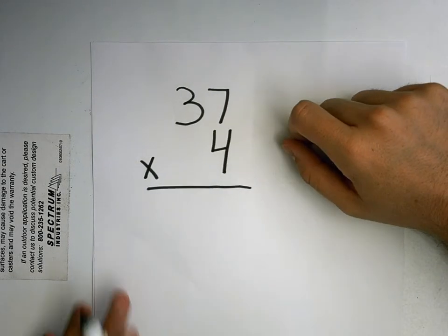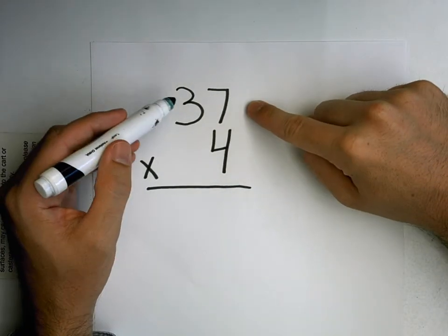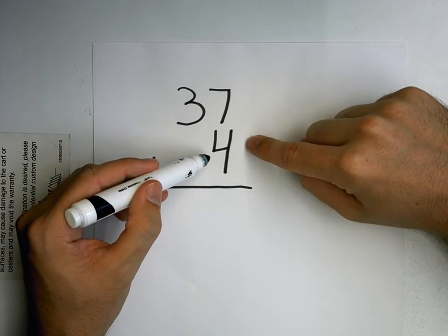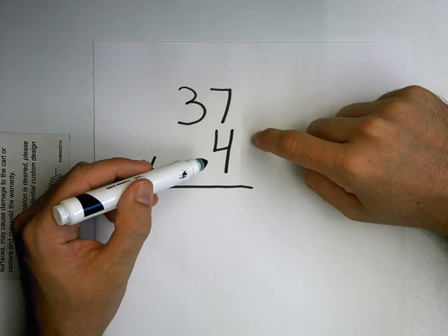When we are multiplying a two-digit number, one that has tens and ones, times a one-digit number, one that just has ones, it's a lot different from addition.